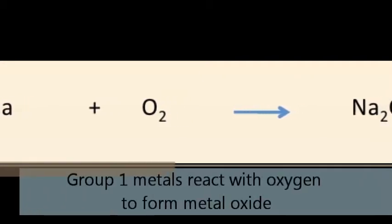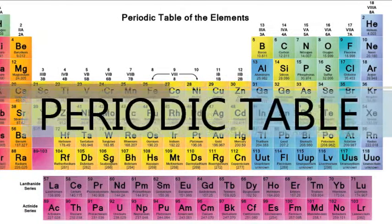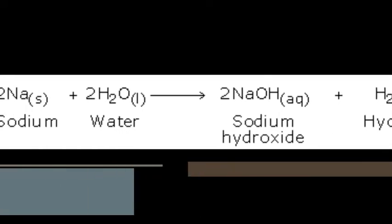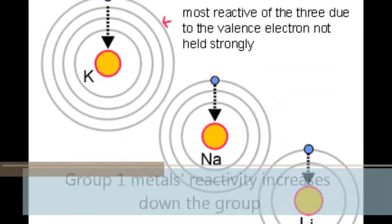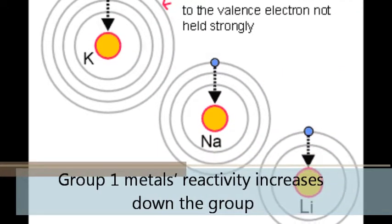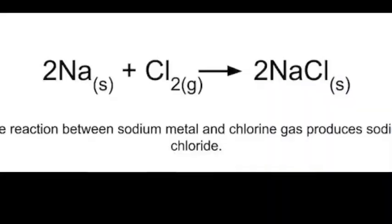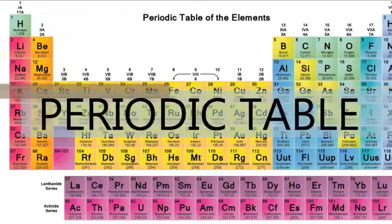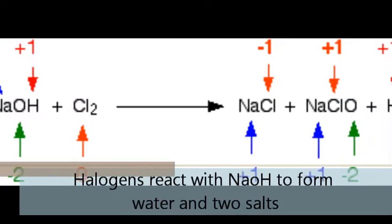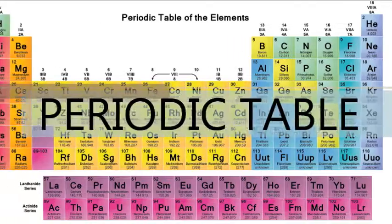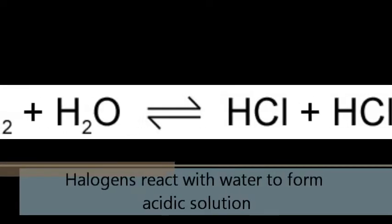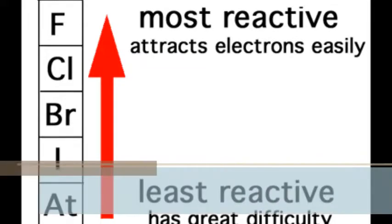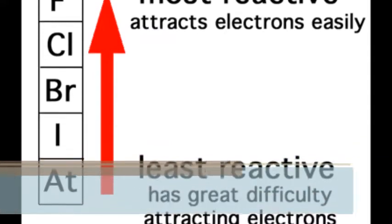Group 1 metals react with oxygen to form metal oxide. Group 1 metals react with water to form alkali. Reactivity increases down the group. Halogens react with metals to form different types of salts. Halogens react with alkalis to form water and salts. Halogens react with water to form acidic solution. Reactivity decreases down the group.